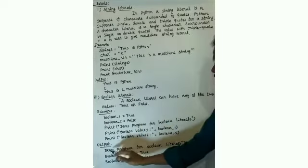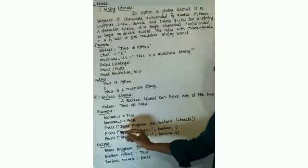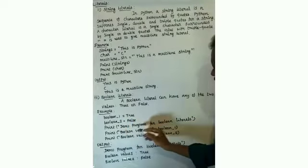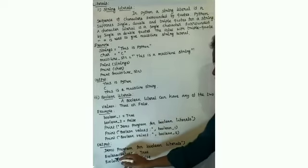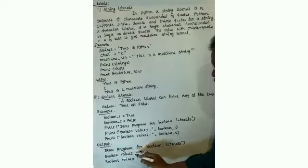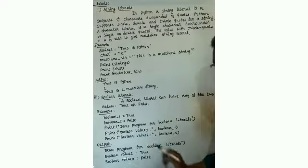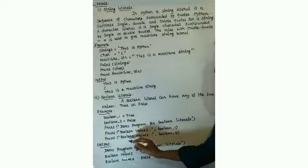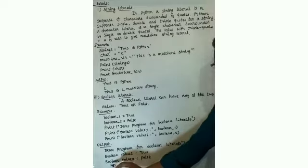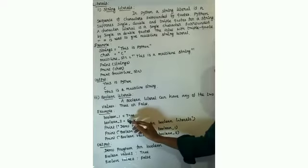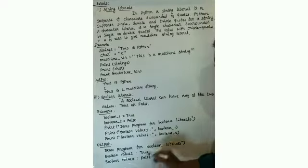Print 'demo program for boolean literal' — within double quotation in the print statement, the same message will display as output. Next, print boolean_one — the value assigned is True, so True is printed. Next, print boolean_two — the value assigned is False, so False is printed.